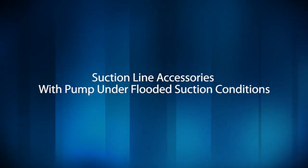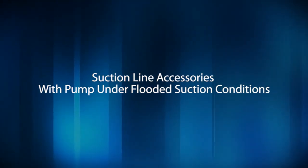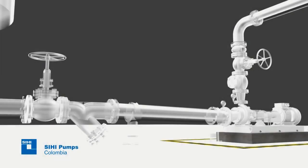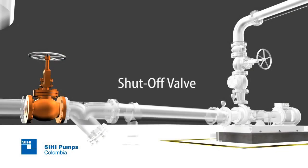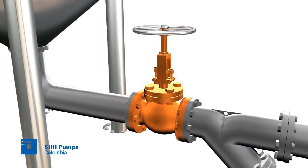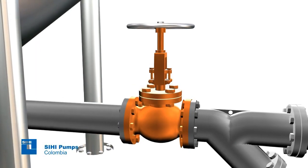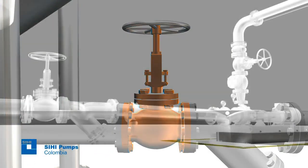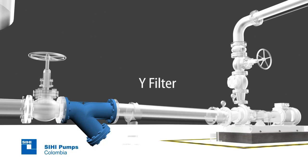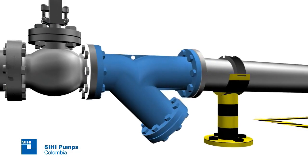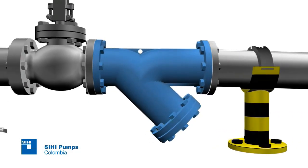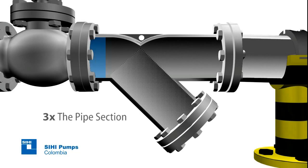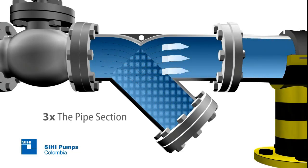Suction line accessories with pump under flooded suction conditions. Additionally, you must have the following accessories. Shut-off valve: While the pump is in operation, it must remain open at 100% and will only be closed for maintenance work. Why filter? When you are certain that the pumped liquid has suspended solid abrasive materials, a filter should be installed. Its filtering area should be at least 3 times the pipe section area where it is installed.